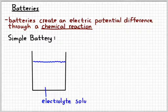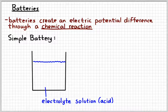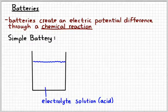So kind of drawing what a simple battery schematic might look like. You take a container and you put in an electrolyte solution. That could be a salt, it could be an acid. Electrolyte just means that it can conduct electricity.